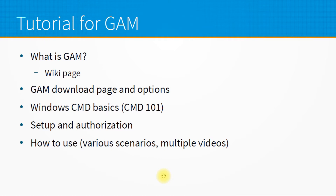Once we are done with that point, we'll move to the fourth point which is the setup and authorization for GAM. I will show you how you can set up and authorize the tool to work with your admin console and give it access to your G Suite data and information. Finally, and this final point is also going to be more than one video — I will show you usage examples and I will try to cover a lot of scenarios and use cases, giving you information on how you can use GAM and what functionality is supported.